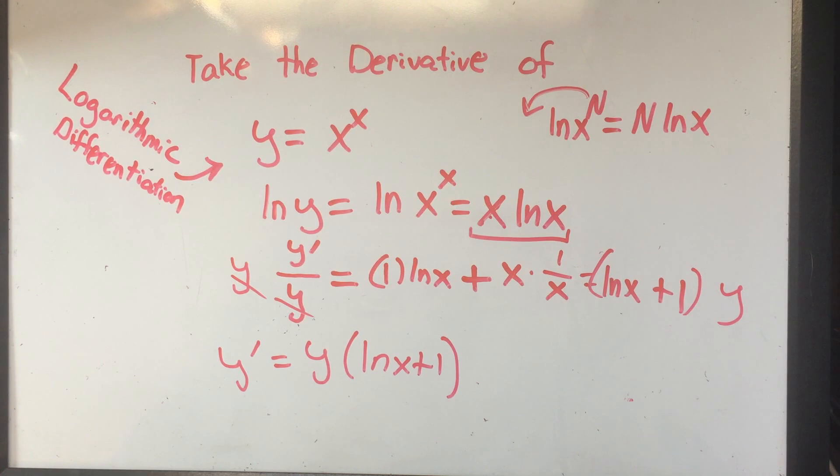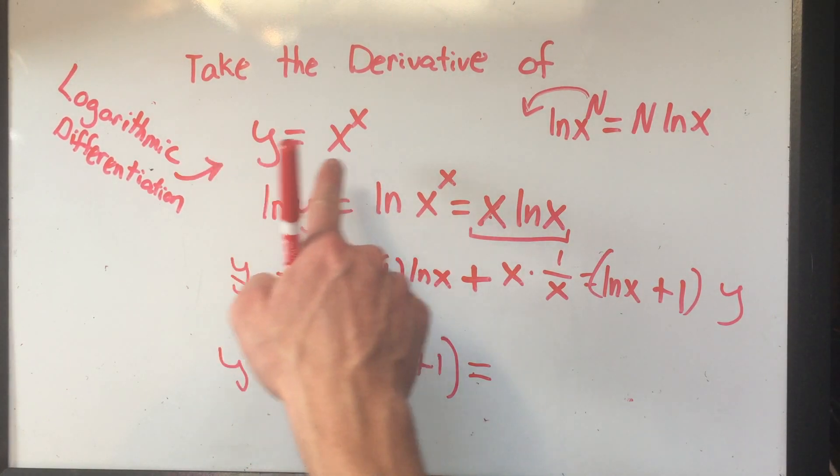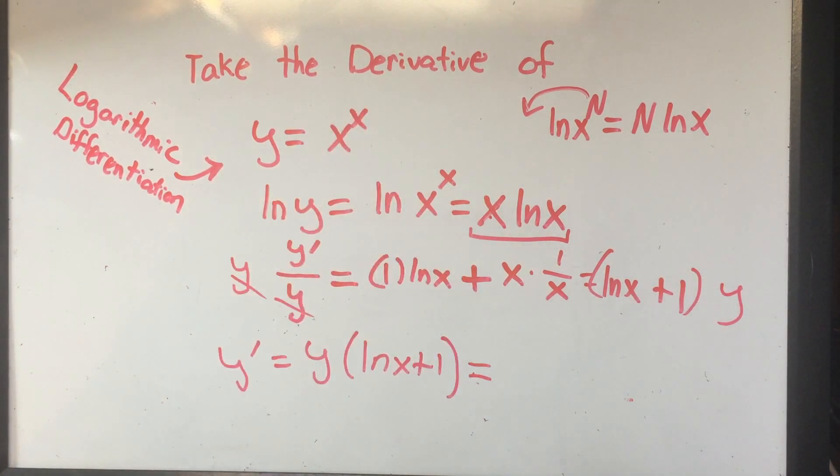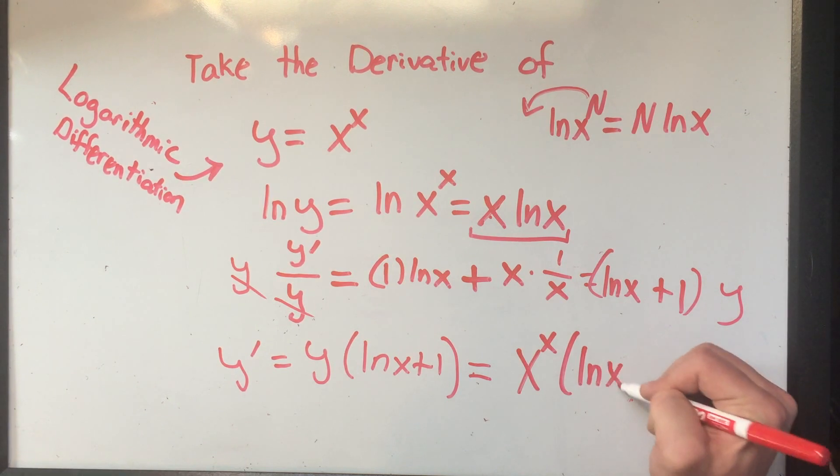And hey, we've taken the derivative. We have y prime equals that's what you want. But you can do one better. You probably want your y prime expressed only in terms of x. What I mean is, I don't want a y in my answer. So how do I find out what y is? Well, y was the original function x to the x. So I can substitute what y was, x to the x times this thing.